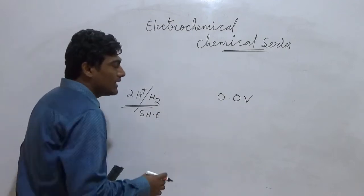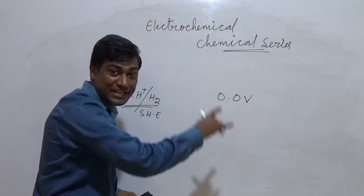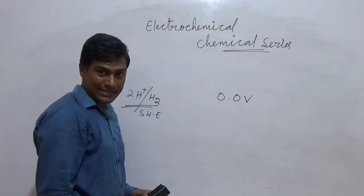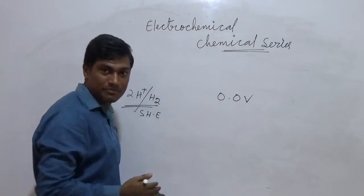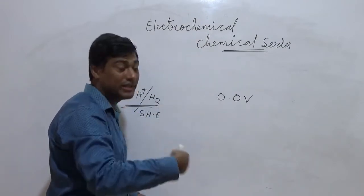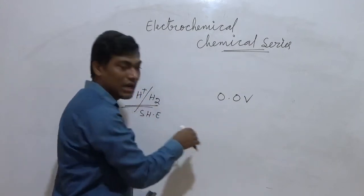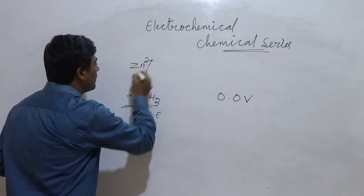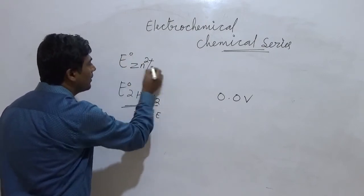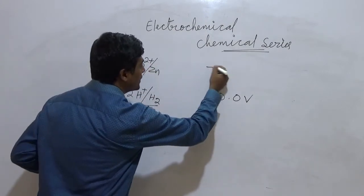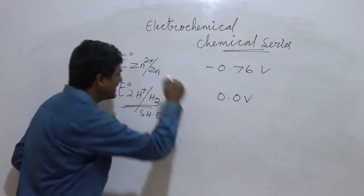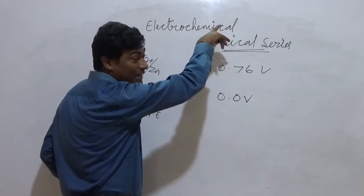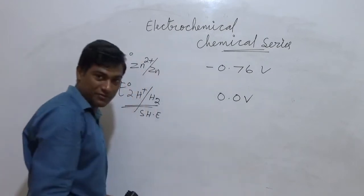We arrange the electrode potentials of various electrodes from negative to positive. The most negative value comes at the top and gradually approaches zero, then becomes positive going downward. Somewhere in the series, zinc will be there: Zn²⁺/Zn = −0.76 volt. There should be all other electrodes arranged according to their values. Copper should be somewhere below the standard hydrogen electrode at +0.34 volt, arranged with increasing values going downward.